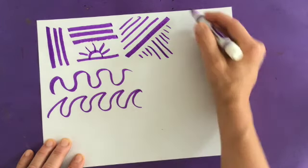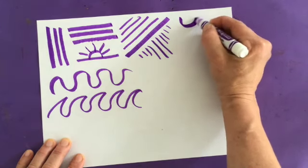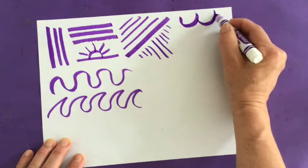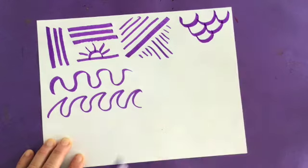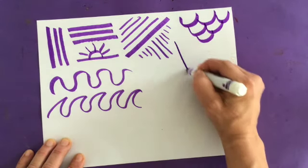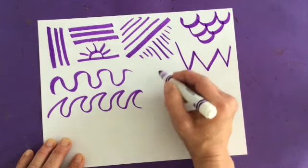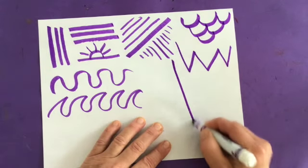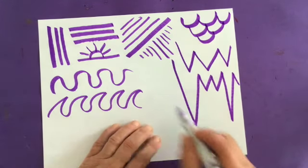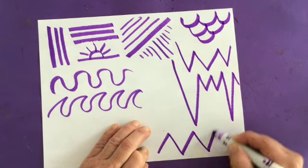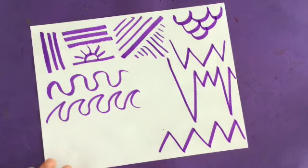You can have something called a scallop line, which is kind of like fish scales. You can have a zigzag line. It can be different. It could be trying to keep it similar. Zigzag line is sharp.